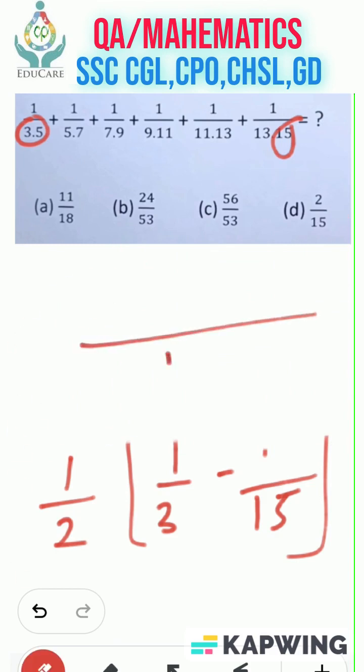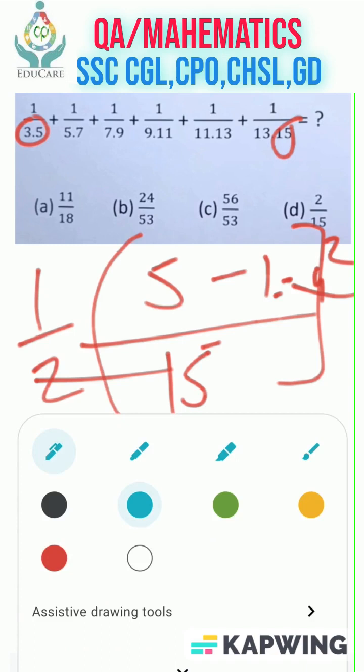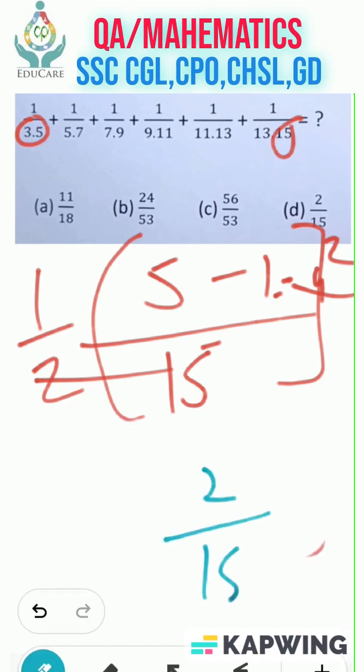For solving, we need to find the LCM 15, 5 minus 1, that is 1 by 2. We will get here 4, 2 to cancel out. So the answer would be 2 by 15. Option number D is the right answer. I hope you got it.